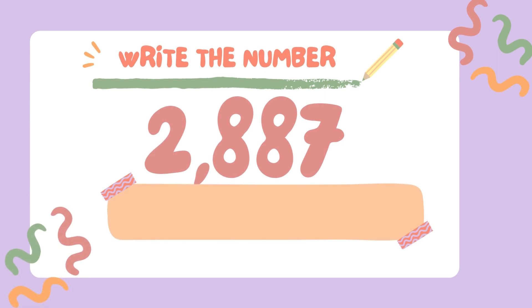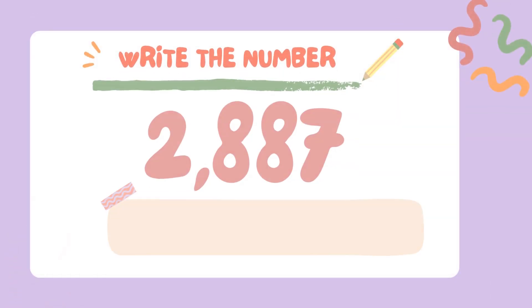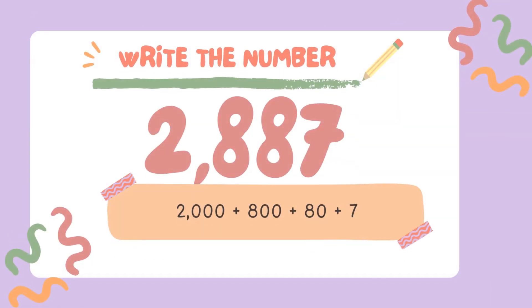Write the number 2887 in Expanded Form. 2,000 plus 800 plus 80 plus 7.